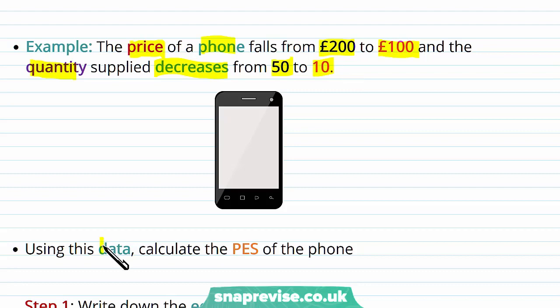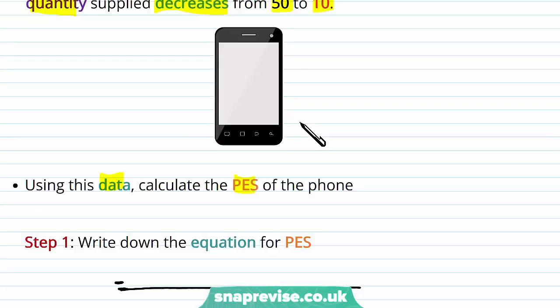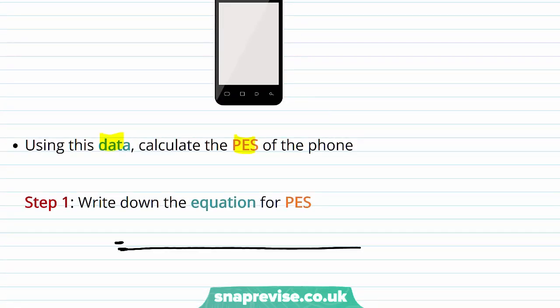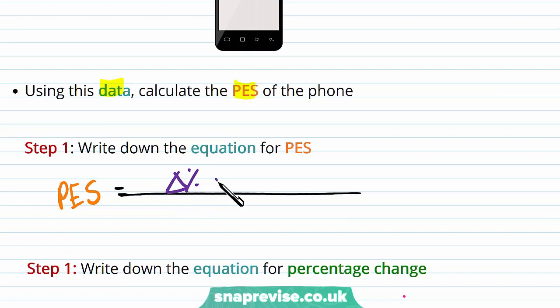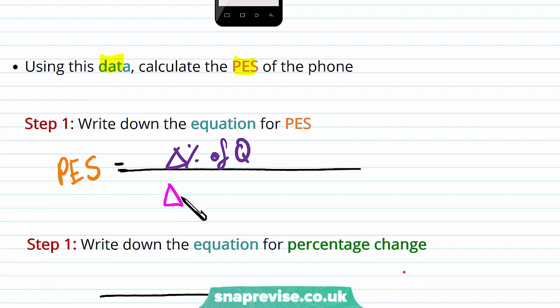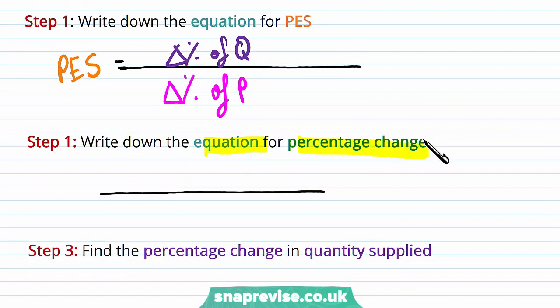So we're going to be using this data to calculate our PES. So let's just remind ourselves once more of our equation for PES. That is PES is equal to percentage change of quantity and the numerator is percentage change of price.